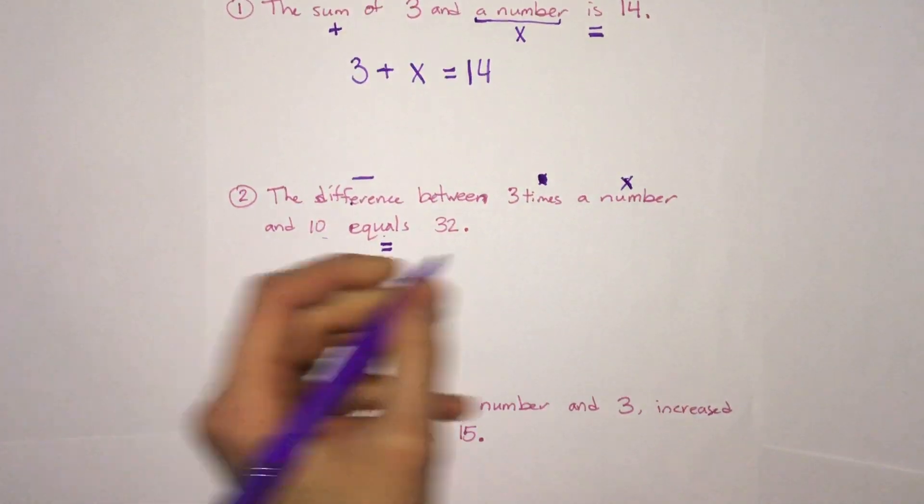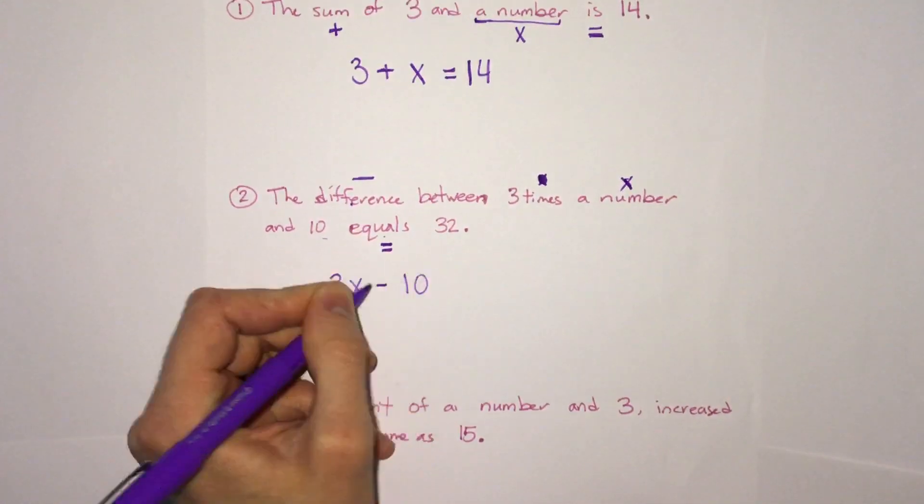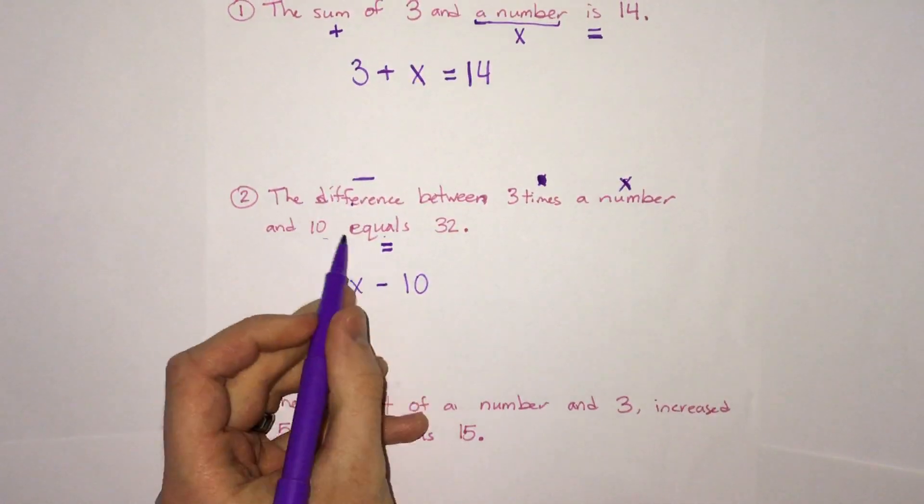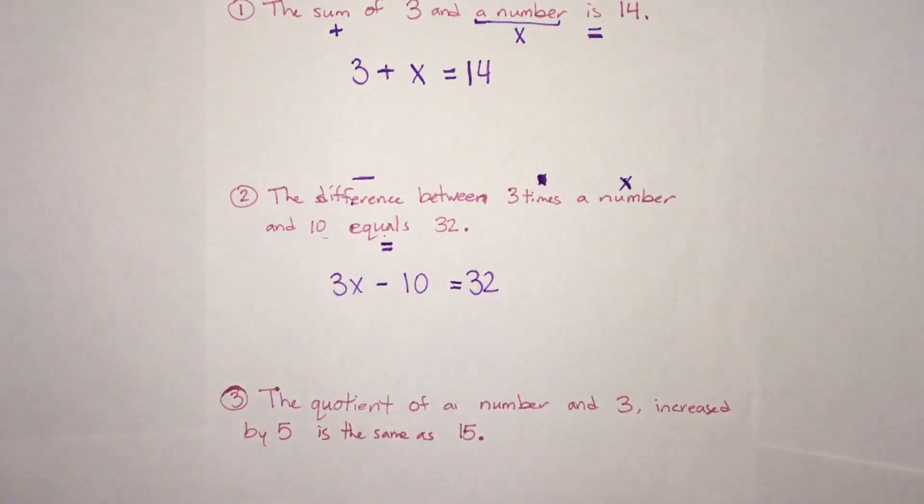So we're doing 3x, three times the number and 10. And we're taking the difference. We're subtracting those. And it says this is equal to 32. 3x minus 10 equals 32. So what we get out of that sentence.